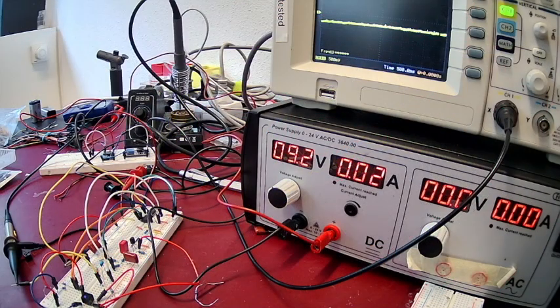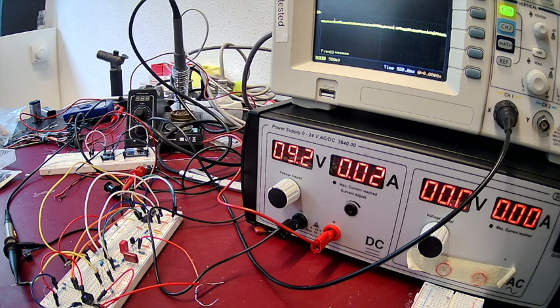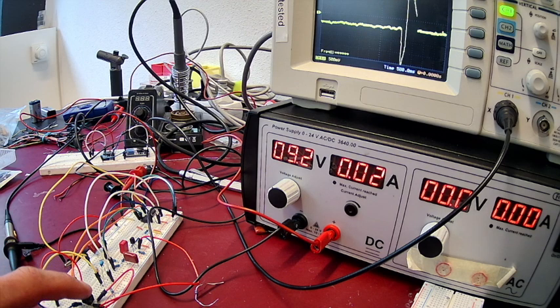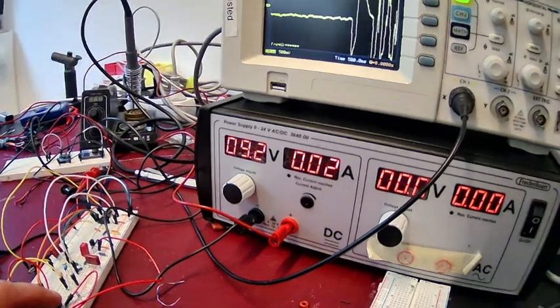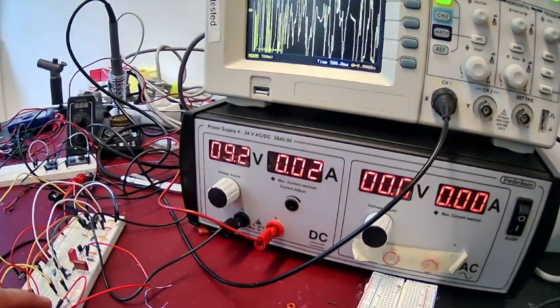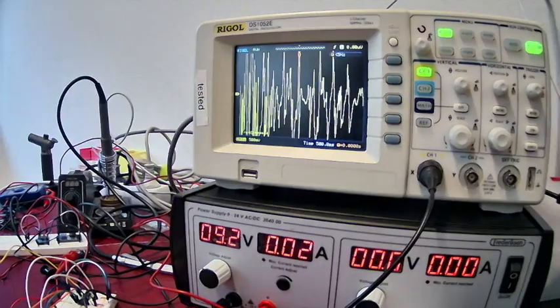We put our time scale on 500 milliseconds and our signal scale on 500 millivolts. And now let's try to put finger on top. Okay. We see that the signal is bit all over the place. We let it stabilize for a moment.